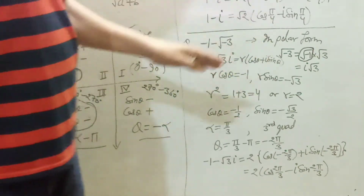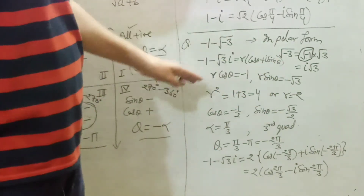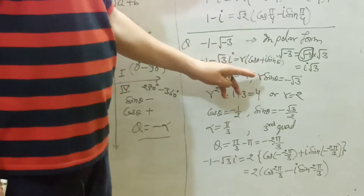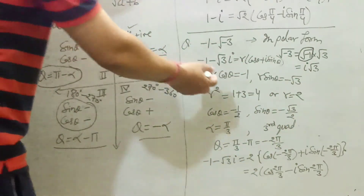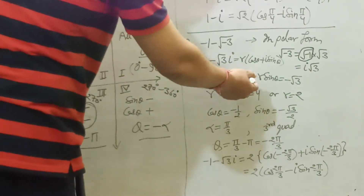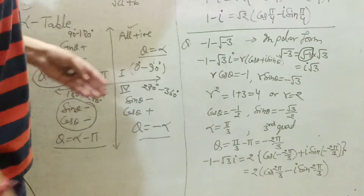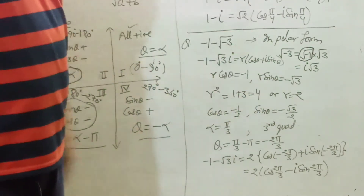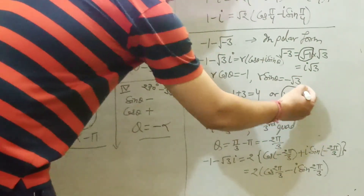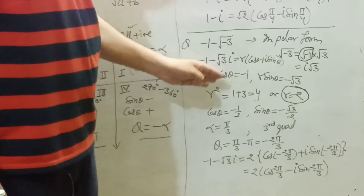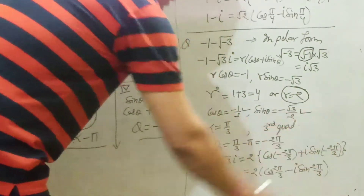Now follow the same process: minus 1 minus root 3 i equals R(cos theta plus i sin theta). On equating both sides: R cos theta equals minus 1, and R sin theta equals minus root 3. On squaring and adding: R squared cos squared theta equals 1, and R squared sin squared theta equals 3 (since (−√3)² = 3). Adding: R squared equals 1 plus 3 equals 4, so R equals 2. Now putting R = 2: cos theta equals minus 1 by 2, and sin theta equals minus root 3 upon 2.